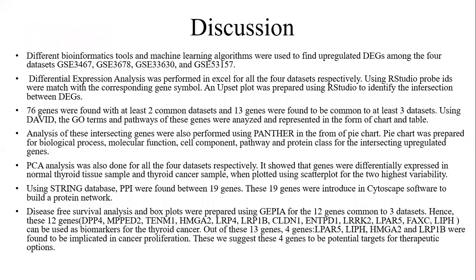In the discussion, different bioinformatics tools and machine learning algorithms were used to find upregulated differentially expressed genes among the four datasets. Differential expression analysis was performed in Excel for all four datasets using t-tests. Using RStudio, probe IDs were matched with corresponding gene symbols. An upset plot was prepared to find the intersection between DEGs. Out of all genes identified, 13 genes were found to be common to at least three datasets. Using DAVID, the GO terms and pathways for the genes were analyzed and presented in charts and tables. These 13 genes can be used as biomarkers for thyroid cancer.